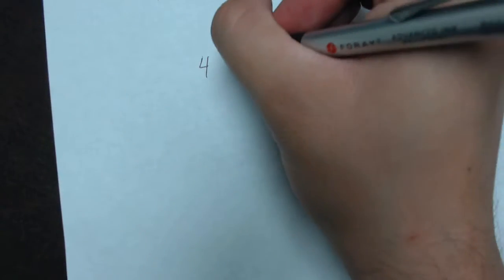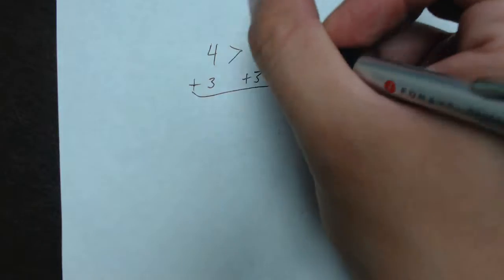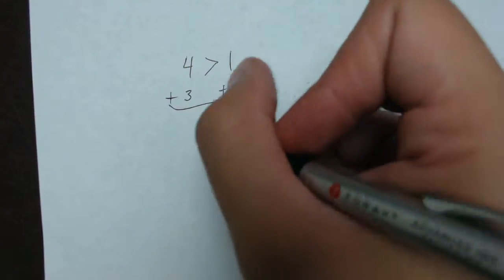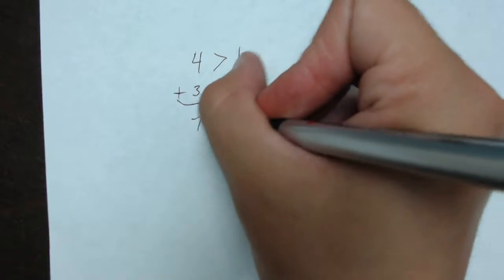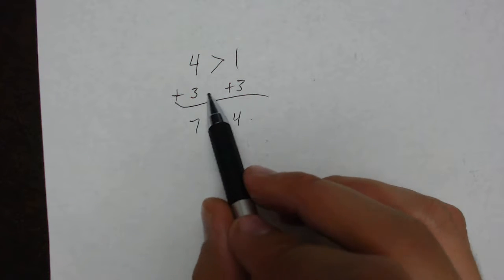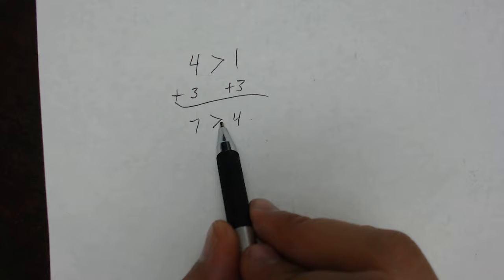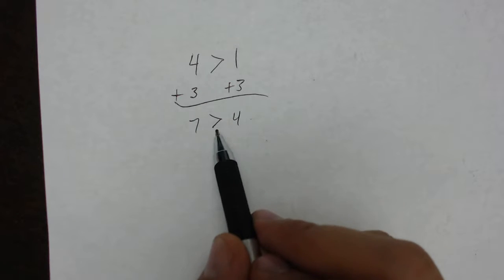Now, let's talk about the additive property of inequality. So, all this property says is that if we have two numbers, like 4 is greater than 1, and let's say we added 3 to each of these, the question is, which answer will be greater? This side or that side? The left side will still be greater. So, the additive property just states that if you add equals to each side of an inequality, the inequality will still remain the same in the same direction. So, the sign will not change.